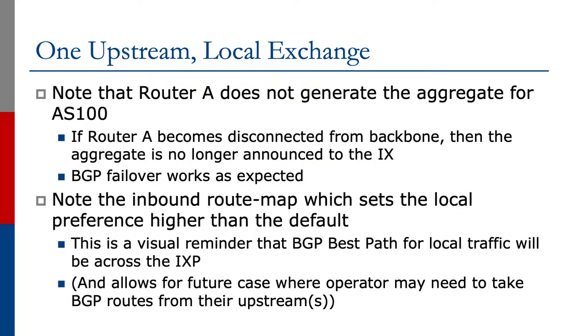Note that Router A does not generate the aggregate for AS100. If Router A becomes disconnected from the backbone, the aggregate would simply disappear from the Exchange Point and BGP failover would work as expected. If Router A did generate the aggregate and then became disconnected from the backbone, it would carry on announcing the aggregate to the Exchange Point. Outbound traffic would go to the upstream provider and find its way to one of the peers, but the peer would see the best path back via Router A announcing the aggregate at the Exchange Point. Because it has nowhere for the traffic to go, it would simply be dropped in the null or discard interface on the router.